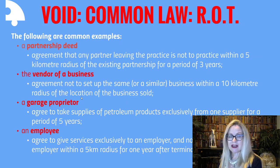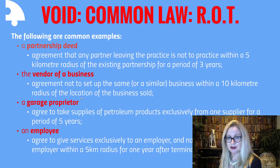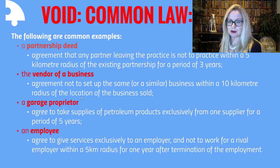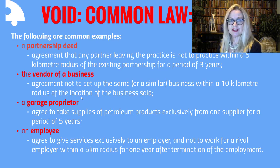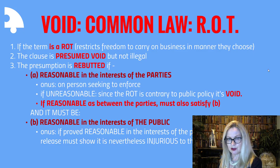Some common examples: in a partnership deed, one partner agreeing not to practice within a five kilometre radius of the existing partnership for three years; the vendor of a business agreeing not to set up the same or similar business within a 10k radius; a garage proprietor agreeing to take petroleum supplies exclusively from one supplier for five years; or an employee agreeing to give services exclusively to an employer and not work for anybody else within a radius of five kilometres for one year after termination. All very common restraints of trade. The natural starting place is to recognise that if a term is considered a restraint of trade it will restrict the freedom to carry on business and will be contrary to public policy. Therefore all such clauses are presumed void.